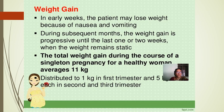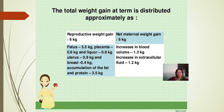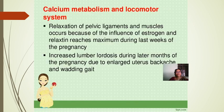Weight gain: in early weeks the patient may lose weight due to nausea and vomiting, but in subsequent months weight gain occurs. Until the last one or two weeks the weight remains static. The total weight gain during a singleton pregnancy for a healthy woman averages 11 kg — about 1 kg in the first trimester and 5 kg each in the second and third trimesters.